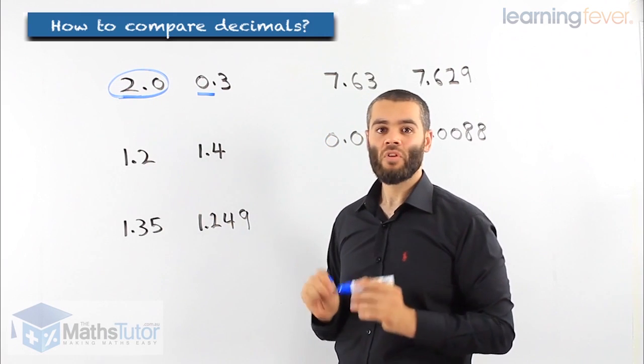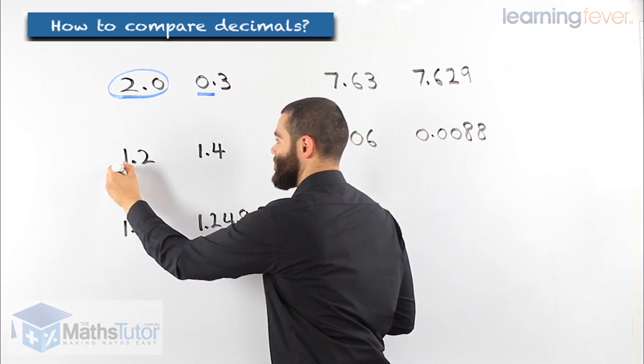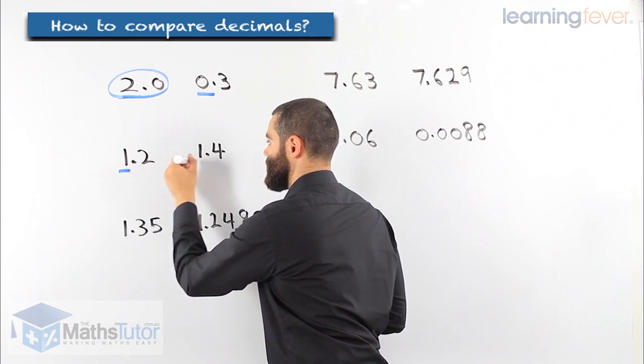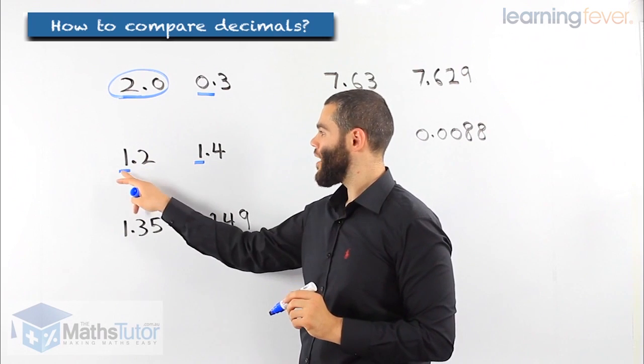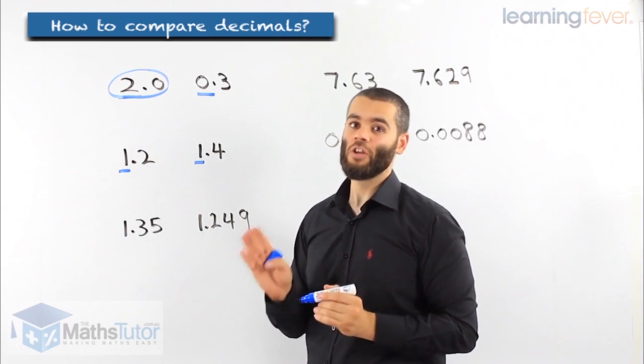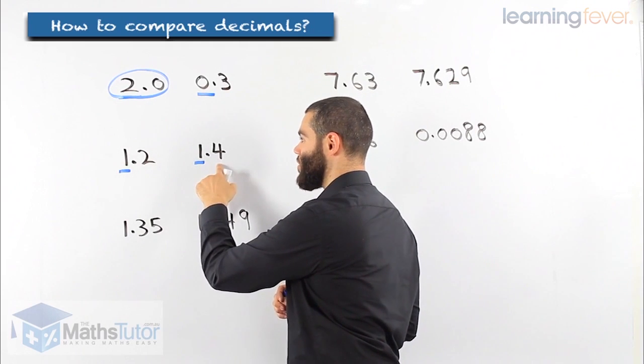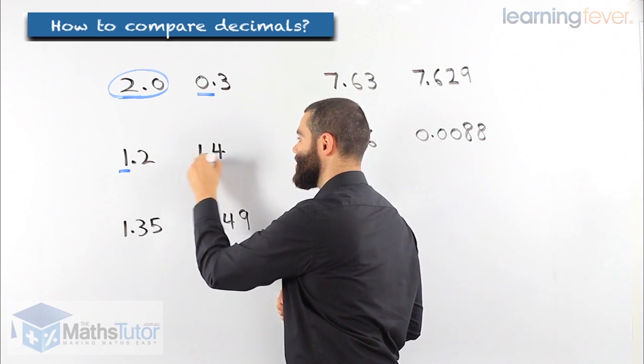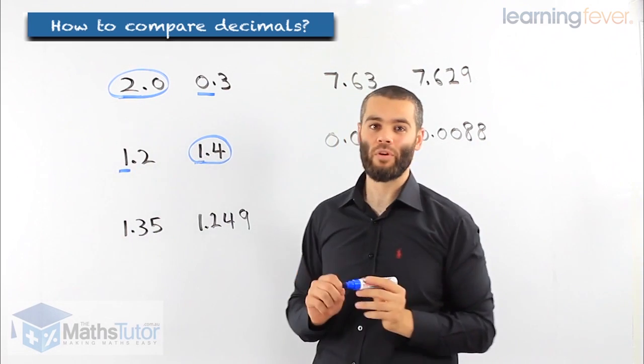Here, we're comparing the place values once again. We start on the left. We compare them, and we realize 1 and 1. They're the same value. We go to the next number. 2 and 4. This is bigger. This is the larger number. 1.4 is larger than 1.2.